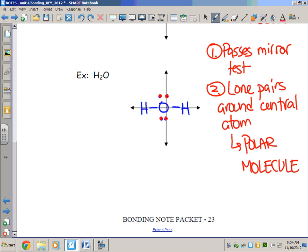So even if something passes the mirror test, if you identify that it has one or more lone pairs around the central atom, then that's also an indication it's polar. The other way I wanted to draw that water molecule for you would have been if you drew the oxygen and did its Lewis structure first, and then put the hydrogens where the unpaired electrons on oxygen are.